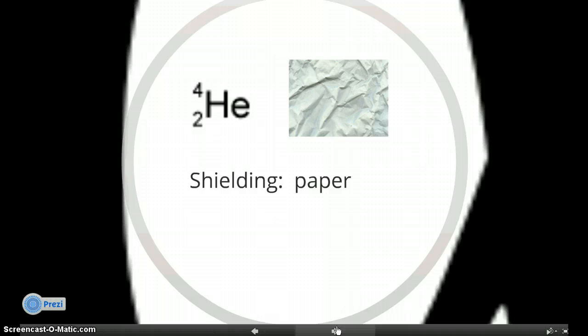But there's also an atomic nuclear symbol. And that's the 4 over 2 HE that you see here. The HE is the element helium, because an alpha particle is just a helium nucleus.